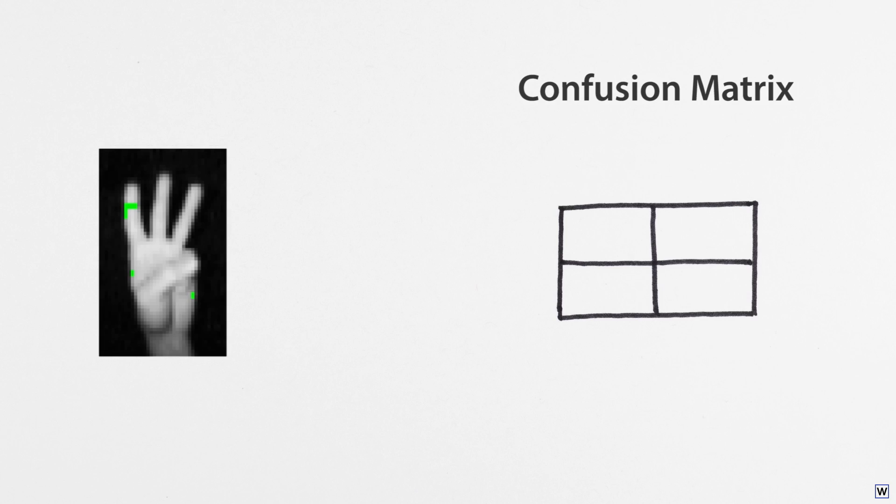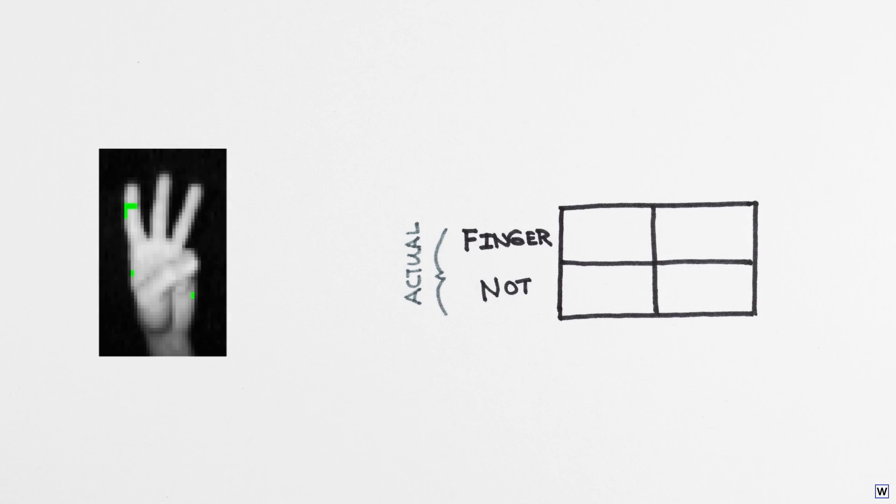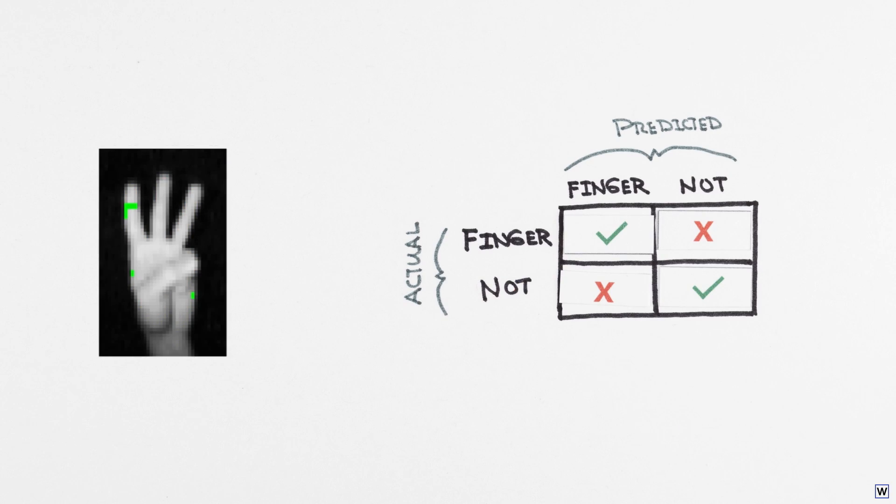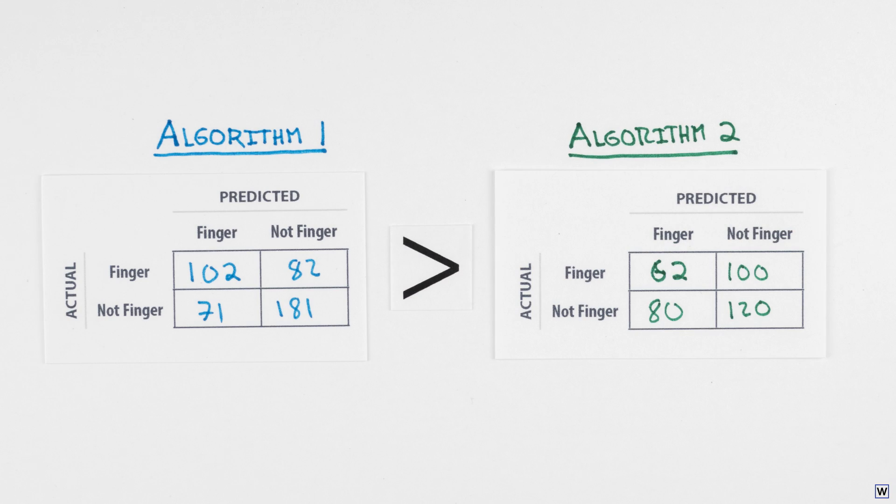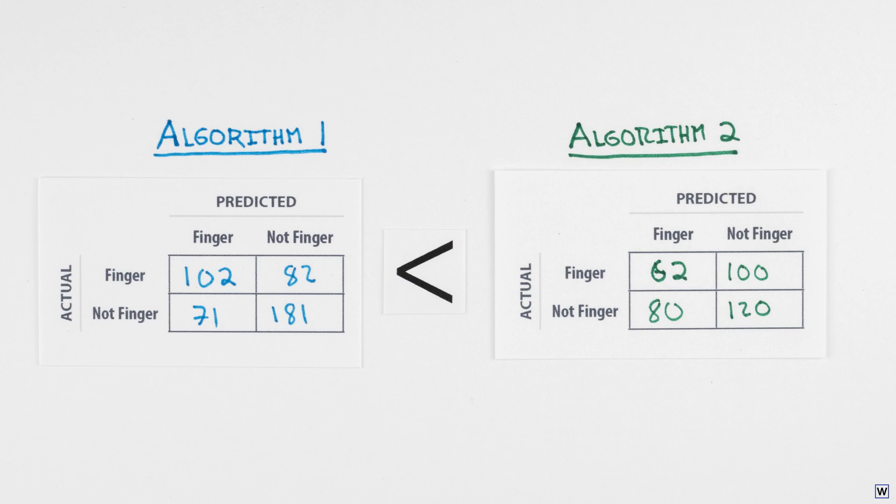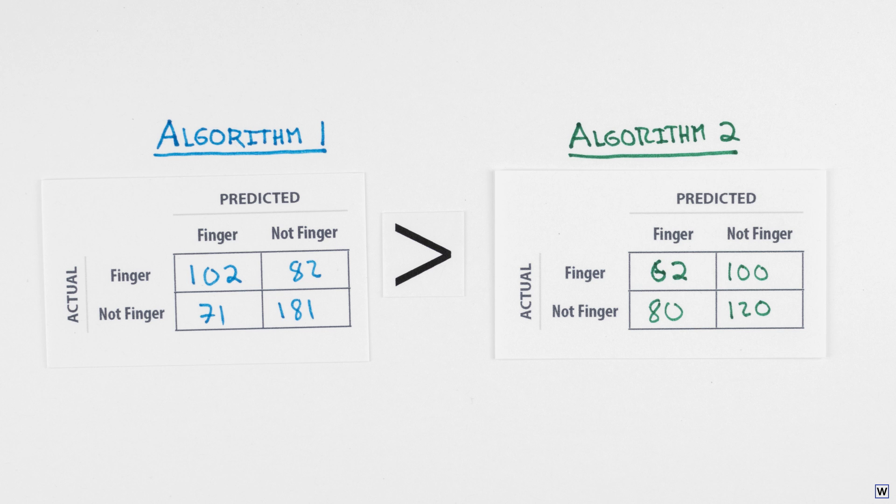Back in part 2, we talked about confusion matrices. These give us a good idea of how a single algorithm is performing, but are difficult to compare across algorithms. We need a way of scoring our confusion matrices, some type of performance metric.